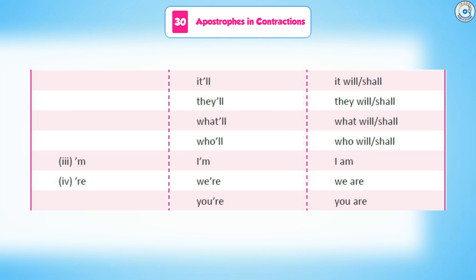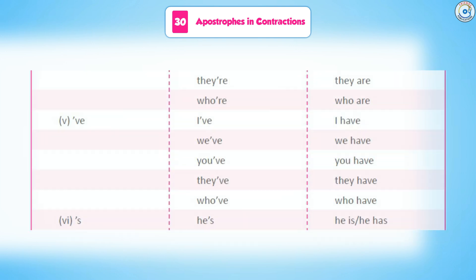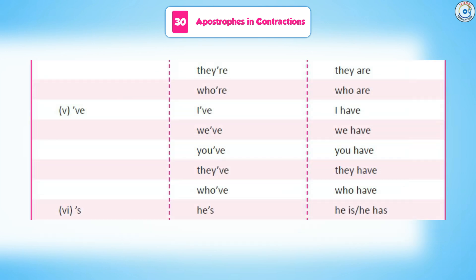Apostrophe + 'm': I'm (I am). Apostrophe + 're': we're (we are), you're (you are), they're (they are), who're (who are).